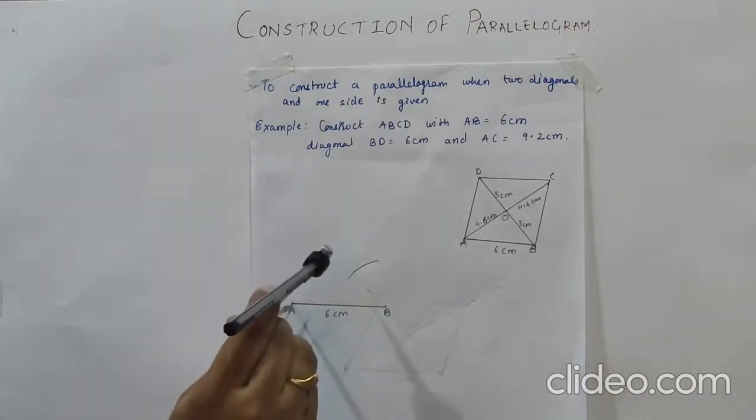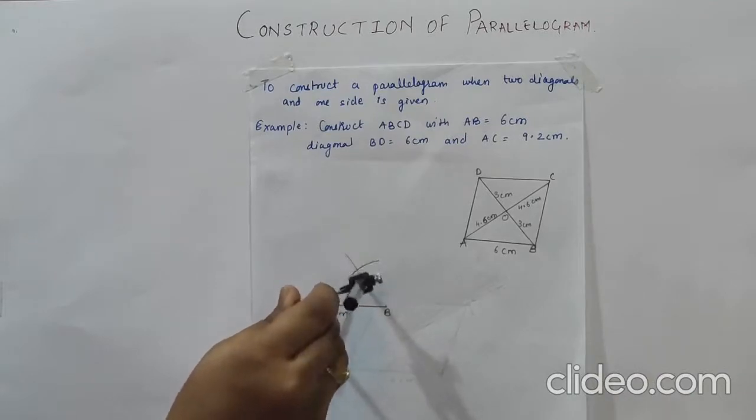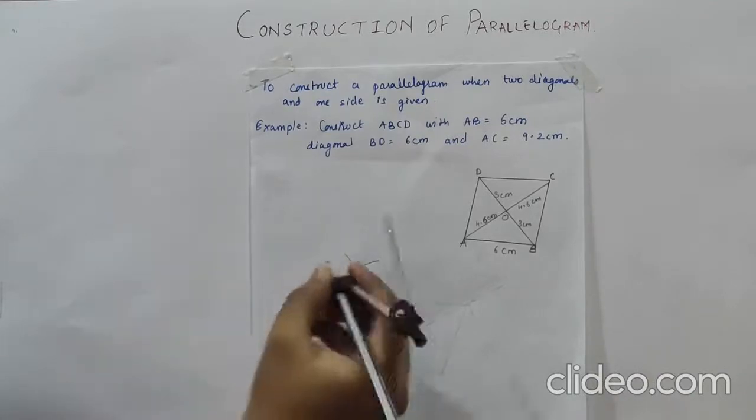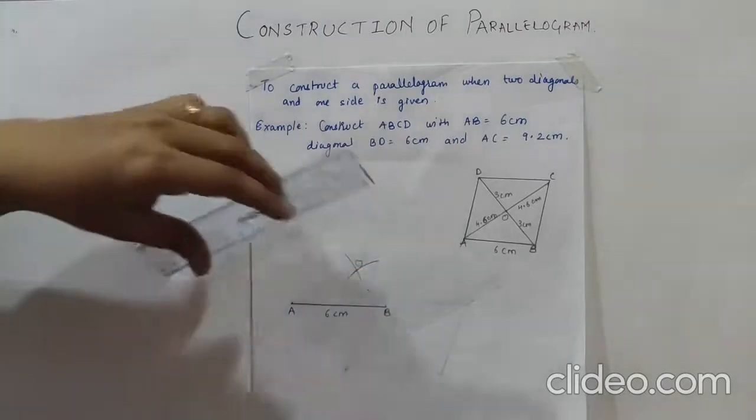Now let us take 4.6 measurement. Keep it center in radius 4.6, cut this arc. This will be my point O. What we have to do now, we have to join AO and OB.